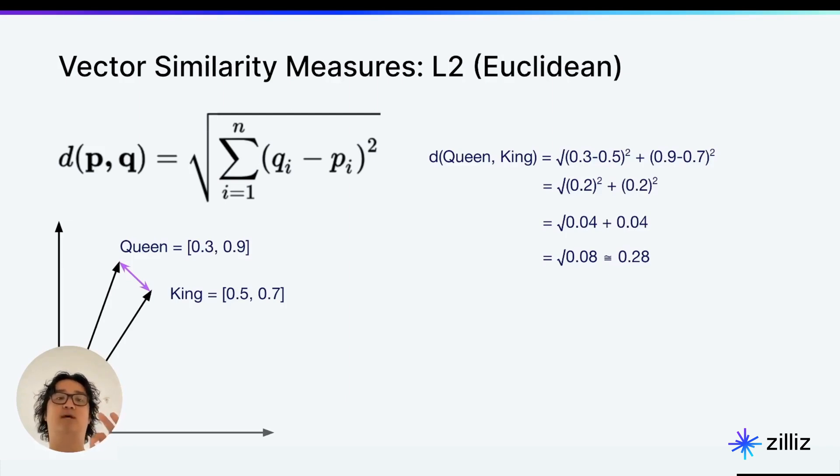And then we're going to send that to number two, so we're going to add in the next square, which is 0.9 minus 0.7 squared. And these are both 0.2, so you get the square root of 0.2 squared plus 0.2 squared is the square root of 0.04 plus 0.04 is the square root of 0.08, which is about 0.28. So that is a quick rundown of L2 and Euclidean distance and how that works.